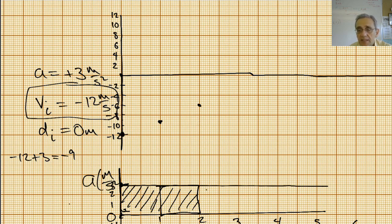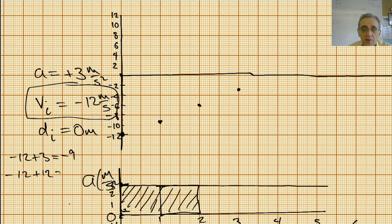We're going to do it again — take away another 3 in the next second and get to negative 3, because negative 6 plus 3 gives us right there. Then at 4 seconds, the total area is 3 times 4 which is positive 12, so negative 12 plus 12 equals 0. That means at 4 seconds we're going to be here at 0.